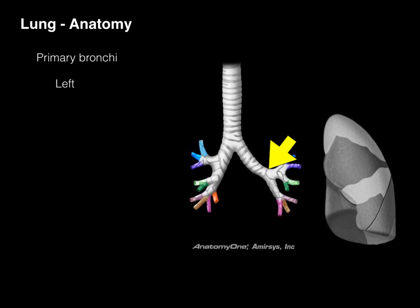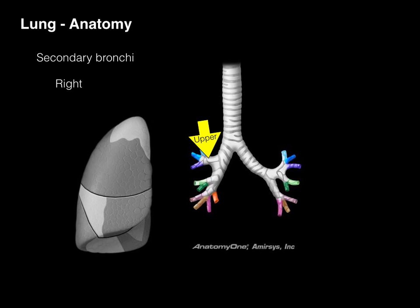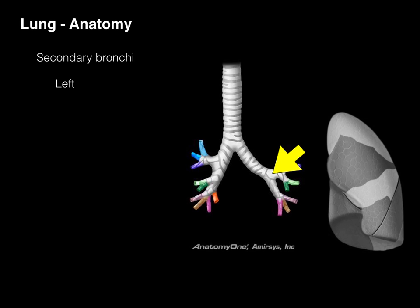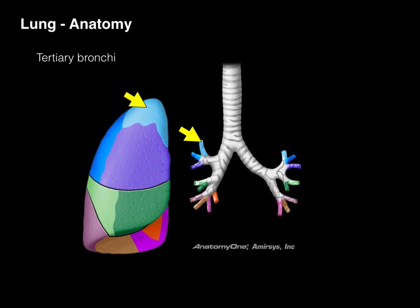The right main bronchus supplies the entire right lung, and the left main bronchus supplies the left lung. Both primary bronchi bifurcate into secondary bronchi, also known as lobar bronchi, because they supply the lobes of each lung. There are three secondary bronchi on the right to correspond to the three lobes. On the left side, there are only two secondary bronchi to correspond to the upper lobe and the lower lobe.